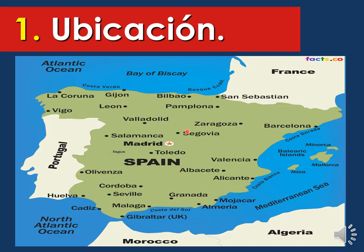Here we have the map of España. Whenever you see a star on a map, it's because you're referring to a capital city. The capital city is going to be Madrid. We have at the top the Bay of Biscay and the Atlantic Ocean. In the south, we have the Atlantic Ocean again, and also the Mediterranean Sea. Countries bordering Spain are France, Portugal, Marruecos (also known as Morocco), and Argelia. Some of the main cities we're going to talk about are Barcelona, Valencia, Sevilla, Madrid, and the bullfight racing occurs in Pamplona — that's why they're called Pamplonadas.